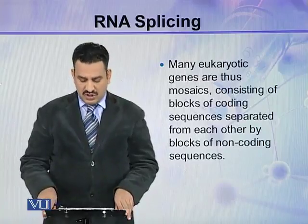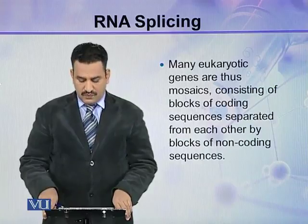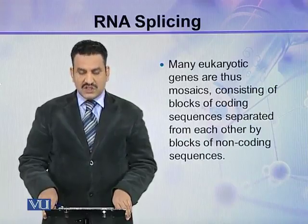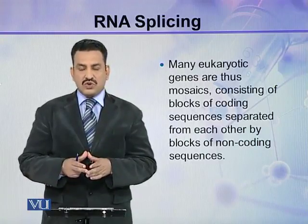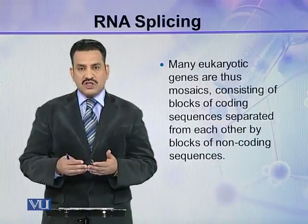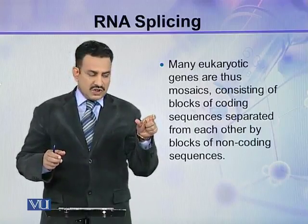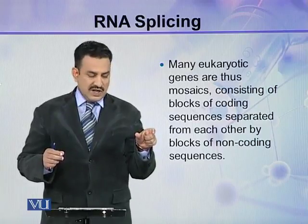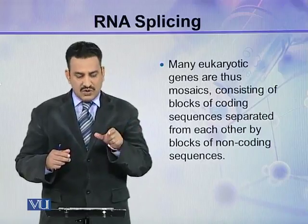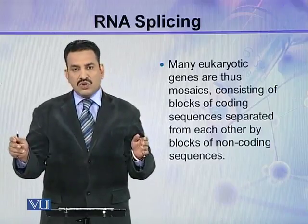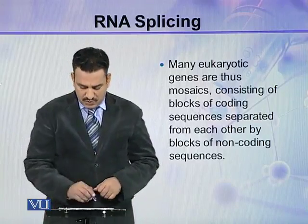Many eukaryotic genes are thus mosaics, consisting of blocks of coding sequences separated from each other by blocks of non-coding sequences. So if we look at a eukaryotic gene, it will consist of a small stretch of coding sequence, then a short or longer non-coding sequence, then coding sequence, then maybe a long non-coding sequence. In this way a eukaryotic gene is made up of alternating coding and non-coding regions.